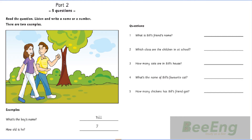Test three. Part two. Look at the picture. Listen and write a name or a number. There are two examples. Hello. Are you the boy in the picture? Yes. My name's Bill. How do you spell it? B-I-L-L. And how old are you? I'm seven. Seven? Yes. Can you see the answers? Now you listen and write a name or a number.